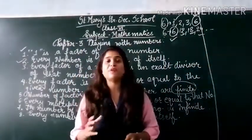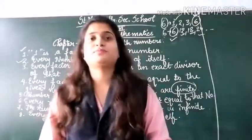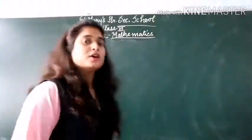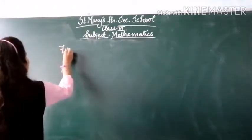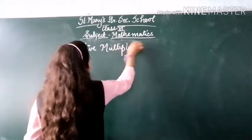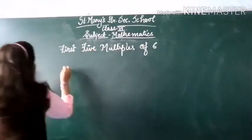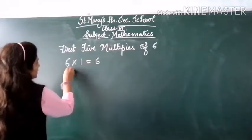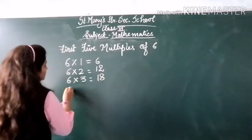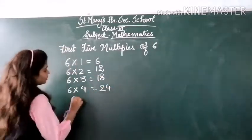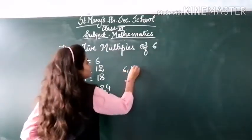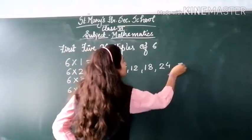I hope you understood the difference between factors and multiples. Let us try to solve some questions. The first question is: find the first 5 multiples of 6. So, 6×1=6, 6×2=12, 6×3=18, 6×4=24, and 6×5=30. The first 5 multiples of 6 are 6, 12, 18, 24, and 30.